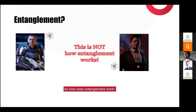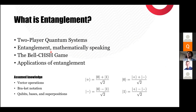Today we'll cover: two-player quantum systems, entanglement mathematically, the Bell CHSH game as a way to prove entanglement exists between quantum particles, and then some applications of entanglement if there's time. I'm going to assume we're all comfortable with vector operations, bra-ket notation, and the basic ideas of qubits, measuring in different bases, and superposition states. If I start going off the rails, please type in the chat — we'll have breaks for questions throughout.